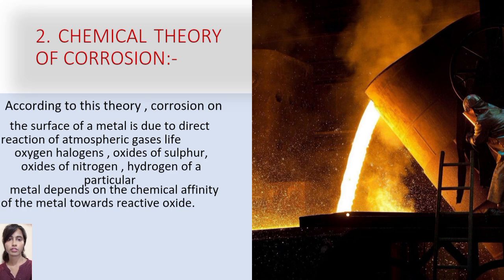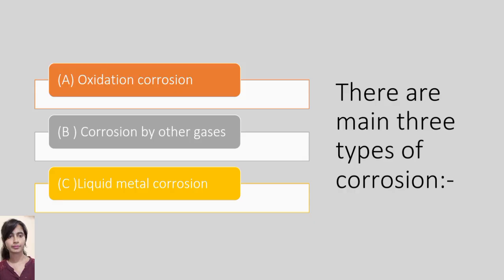Chemical theory of corrosion. According to this theory, corrosion on the surface of the metal is due to the direct reaction of atmospheric gases like oxygen, halogens, oxides of sulfur, oxides of nitrogen, and hydrogen on the particular metal, depending on the chemical affinity of the metal towards the reactive gas. There are three main types: oxidation corrosion, corrosion by other gases, and liquid metal corrosion.